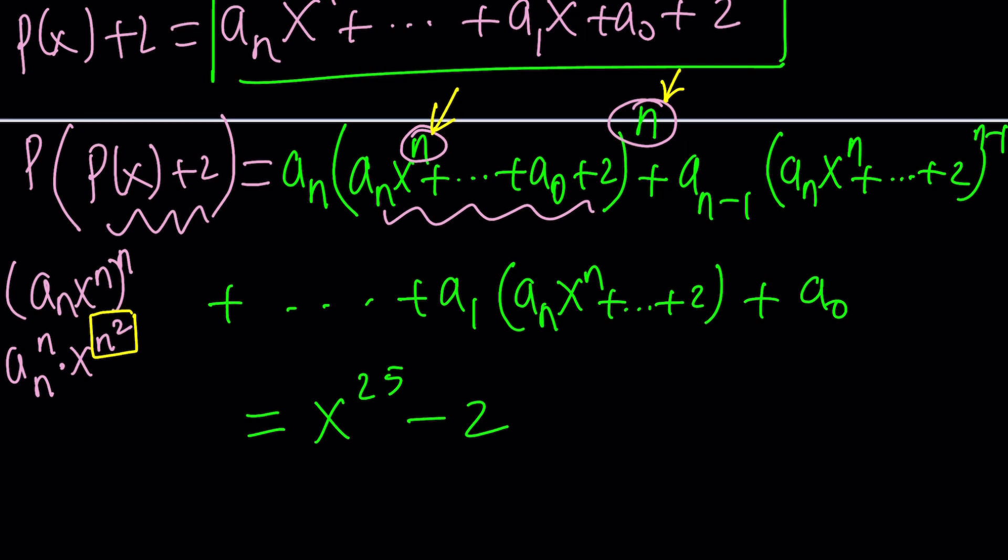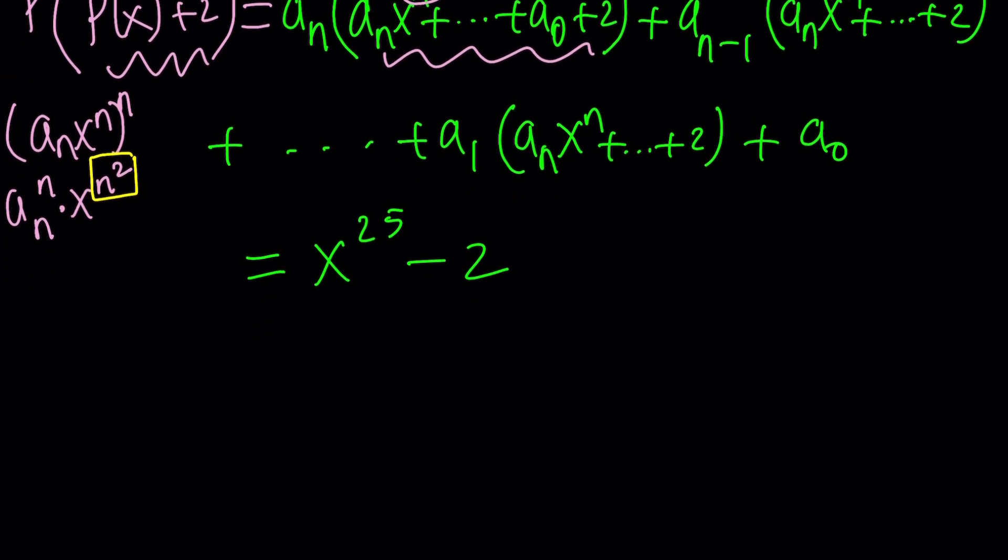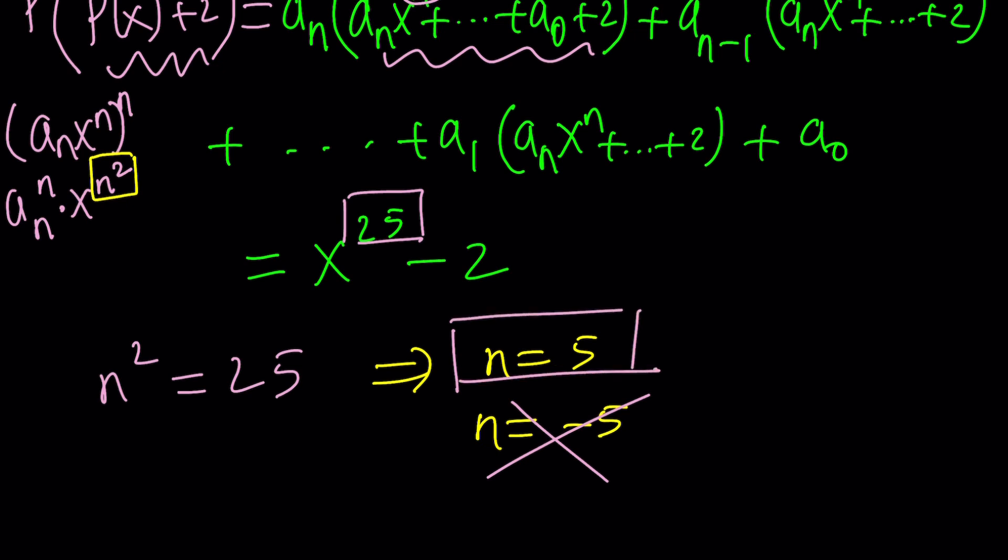So this polynomial's degree is n squared, but it's also equal to another polynomial whose degree is 25. What does that mean? If two polynomials are equal, then their degrees are equal. Obviously. You can't have a cubic polynomial equivalent to a quadratic, unless the coefficient of the cubic is zero, in which case you will have a quadratic equals a quadratic. So this means n squared equals 25. And this is a huge discovery. This is a big deal. So from here, we get n equals 5 or n equals negative 5. But this is a polynomial. It does not accept negative powers, negative values. So we're going to have to go with n equals 5, which is not bad. So now we know that P of X must be a quintic polynomial.